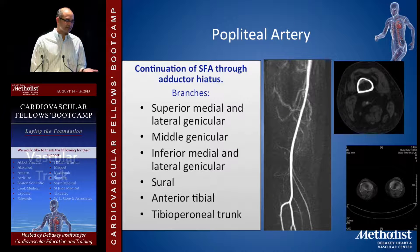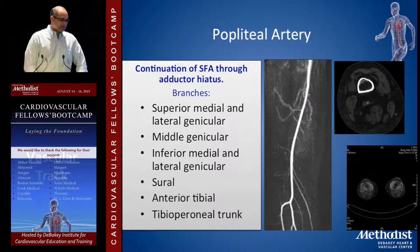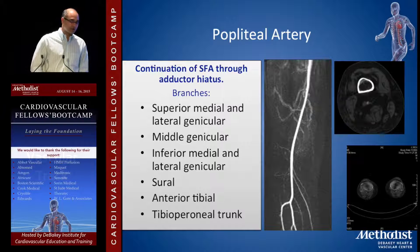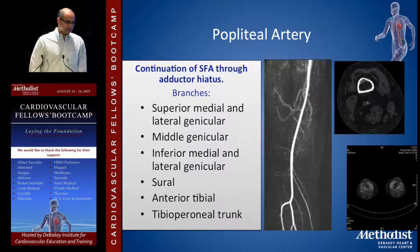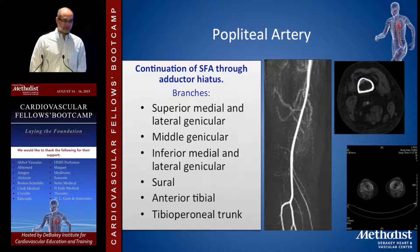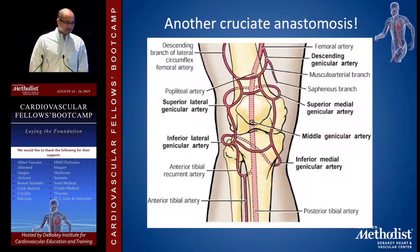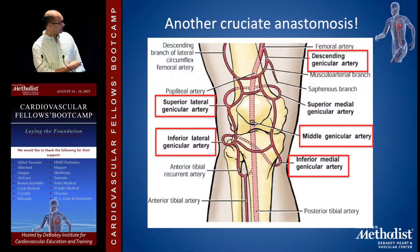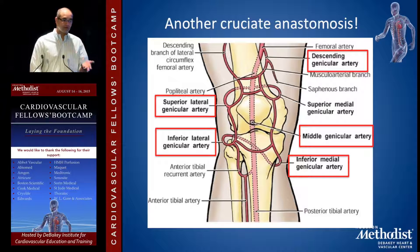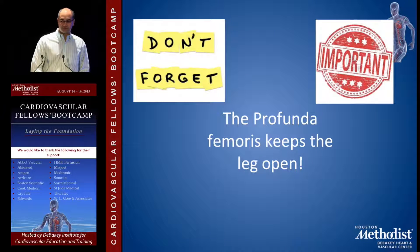The popliteal artery is a continuation of the SFA at the adductor hiatus. It has important collateral supply in case the distal popliteal or trifurcation is compromised — medial and lateral genicular, middle genicular, inferior medial and lateral genicular, the sural branch, anterior tibial, and the tibial peroneal trunk. This becomes the site of the second cruciate anastomosis. At the knee, the descending genicular, superior lateral, inferior lateral genicular, middle and inferior genicular arteries all contribute to flow going down to the foot.